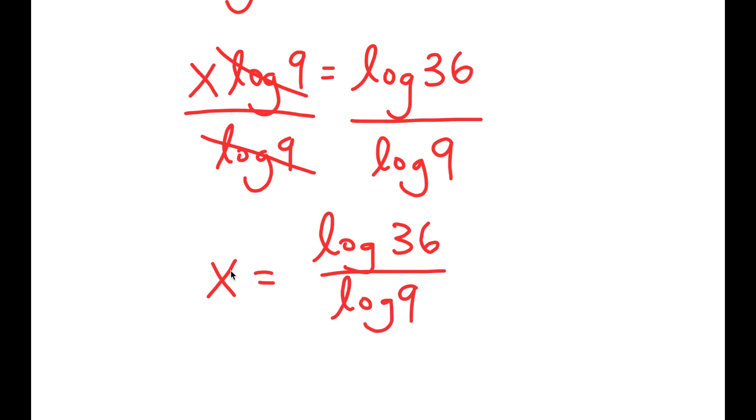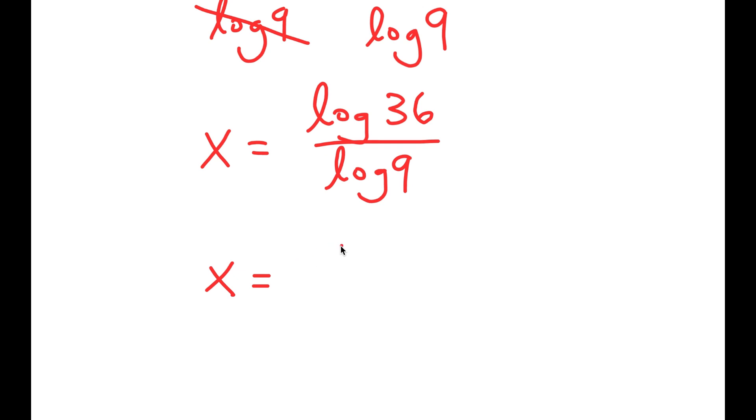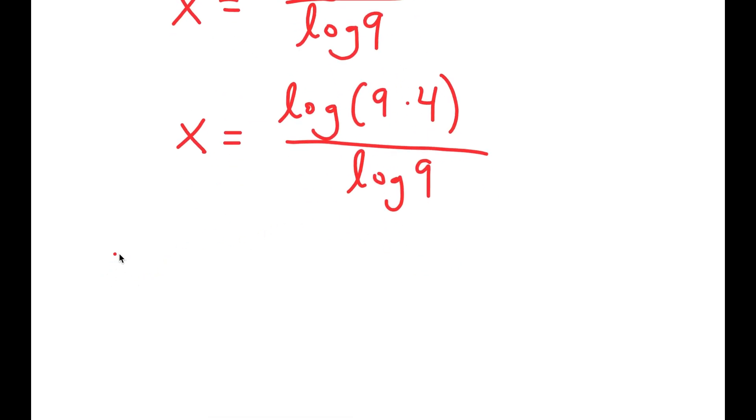Now, we aren't done yet because we want to find the exact value of x, so we don't want any logarithms in our solution. So now what I'm going to do is I'm going to rewrite log of 36 as log of 9 times 4 because I just want to simplify log 36. And now, I can use the property that states that if I have something in the form log a times b, this is equal to log a plus log b.